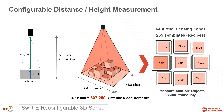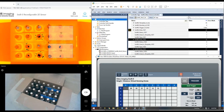With this type of configurable flexibility, you can see how easy it is to detect multiple objects and make multiple decisions simultaneously. You can save up to 255 templates, thus covering many different applications. Now let's go into an active SWIFT-E system and see how a single 3D sensor can help solve these complex applications.